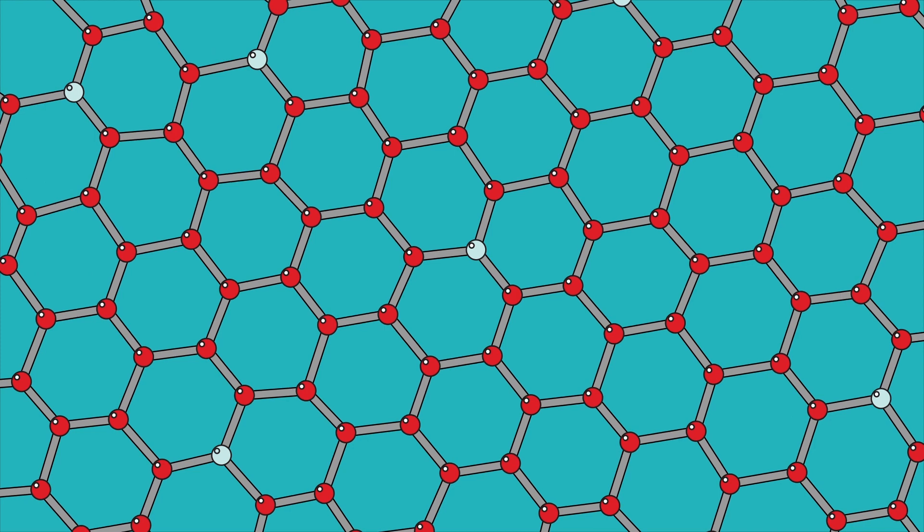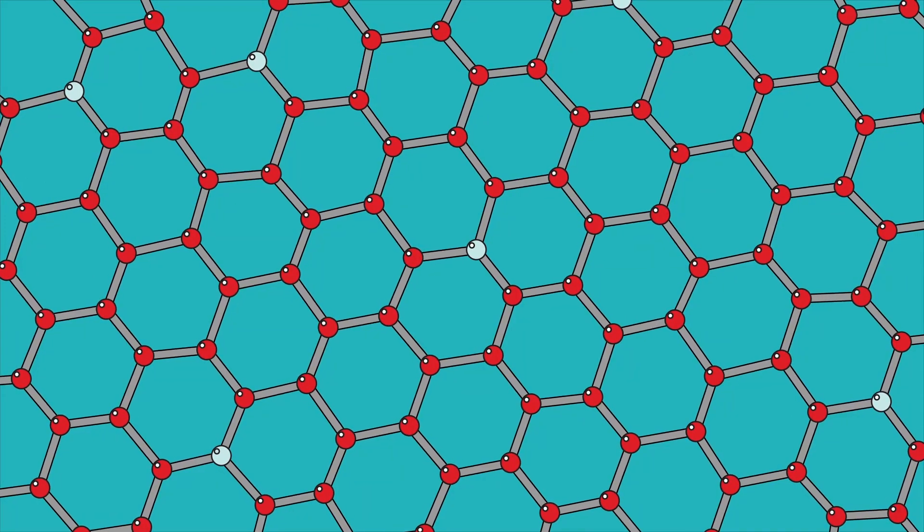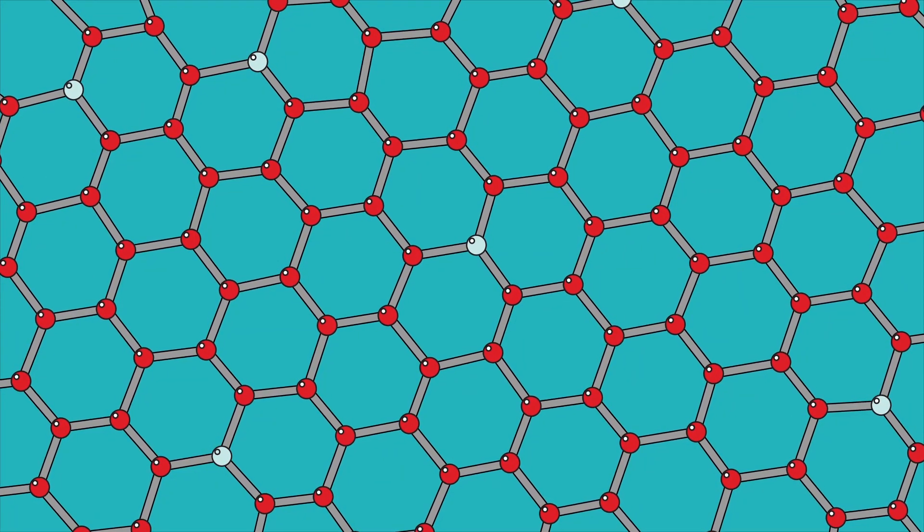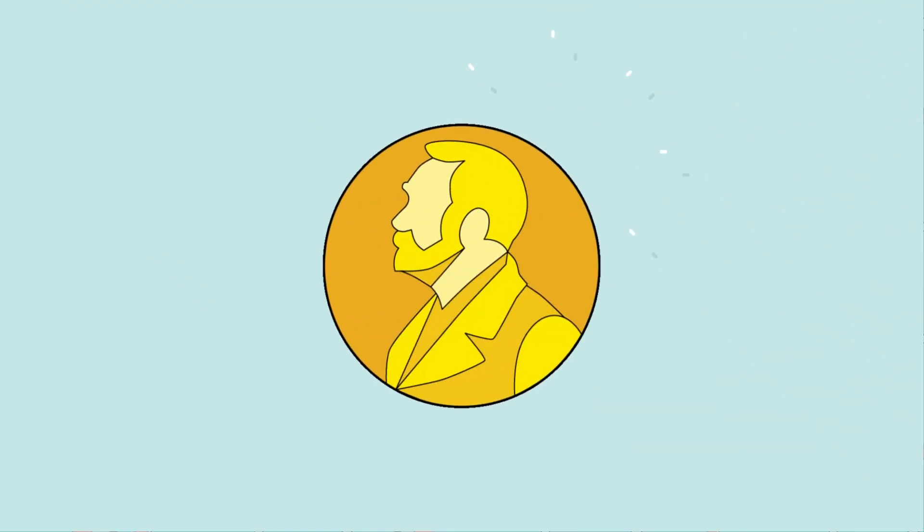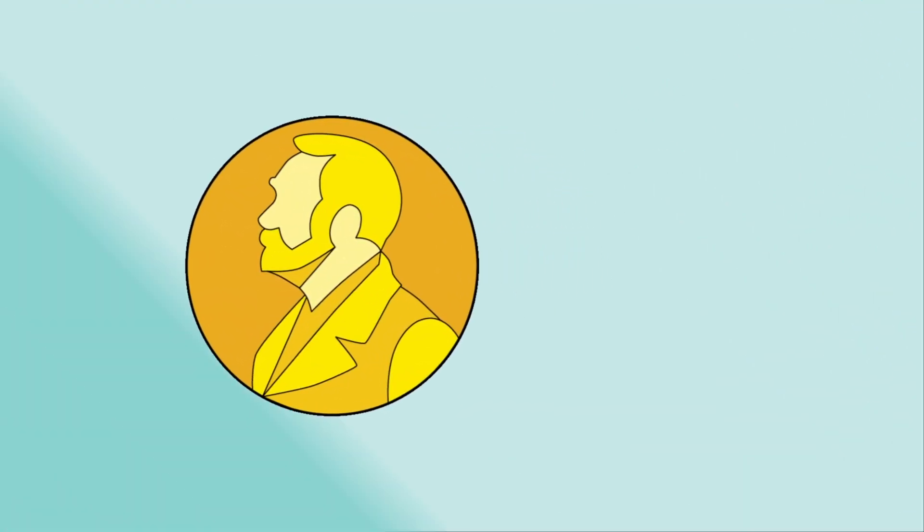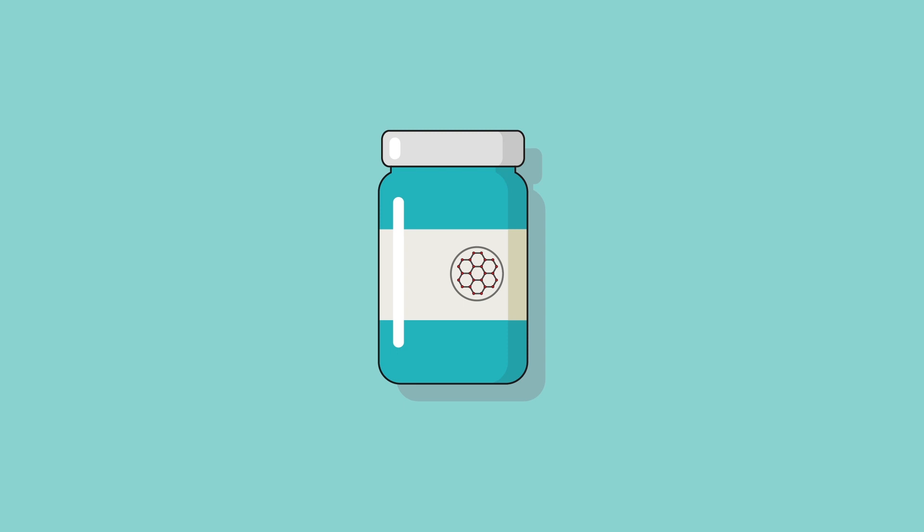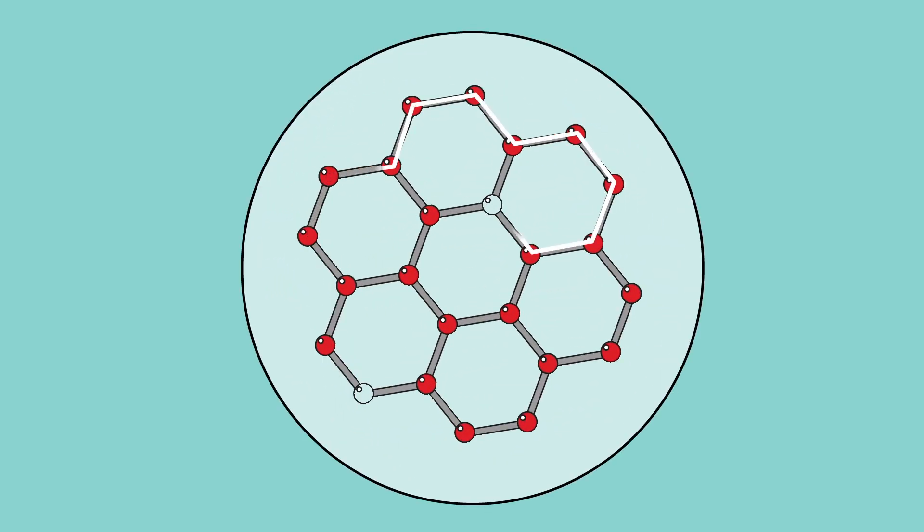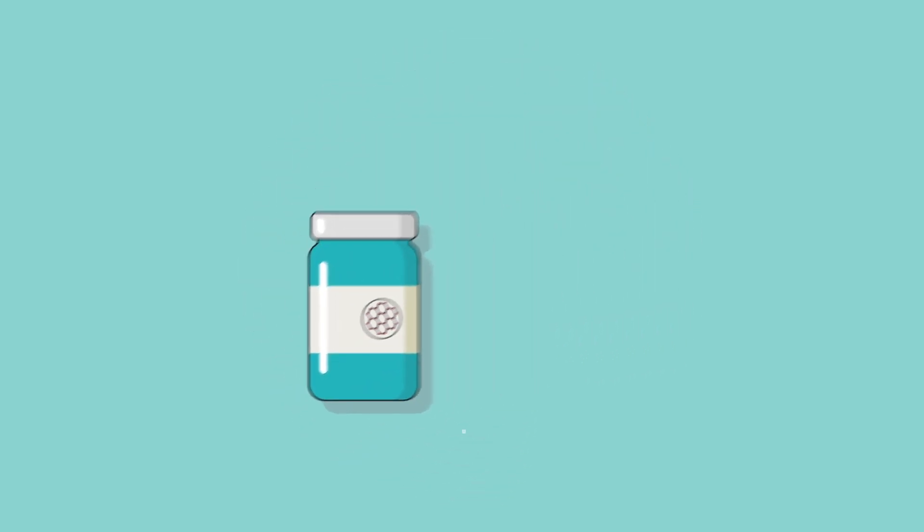2D materials are one such material. They are just one layer of atoms thick, and their discovery was met with the Nobel Prize in 2010. By placing these materials on the surface of a tag to form a QID, we can map the imperfections locked within them using a simple method with a camera.